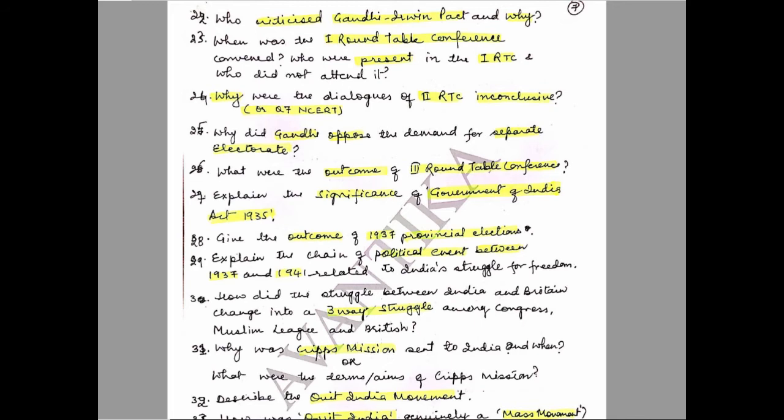Question 22: Who criticized the Gandhi-Irwin Pact and why? Question 23: When was the first Roundtable Conference convened? Who were present, and who did not attend it? Question 24: Why were the dialogues of the second Roundtable Conference inconclusive — or question 7 NCRT? Question 25: Why did Gandhi oppose the demand for separate electorate?